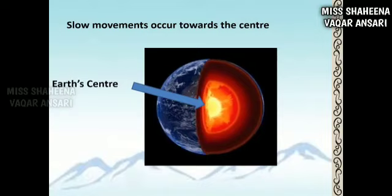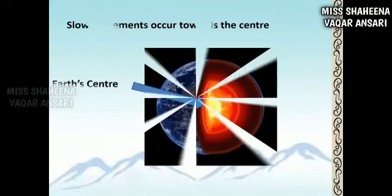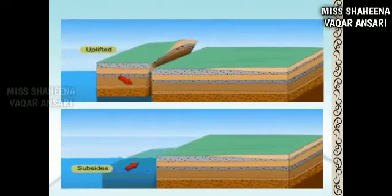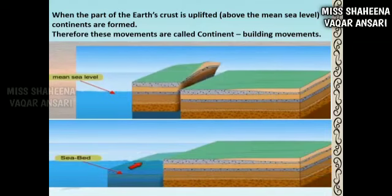Slow movements occur towards the center or from the earth's center towards the earth's crust. Because of these movements, a vast part of the earth's crust is uplifted or gets subsided. When the part of the earth's crust is uplifted above the mean sea level, continents are formed. Therefore, these movements are called continent-building movements.